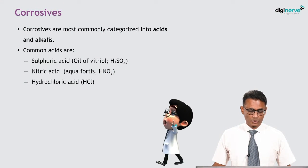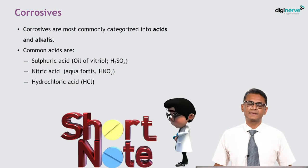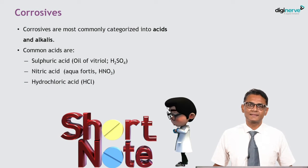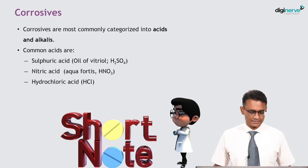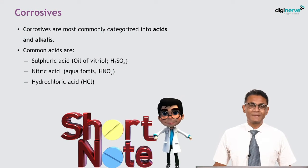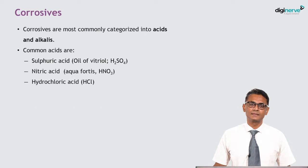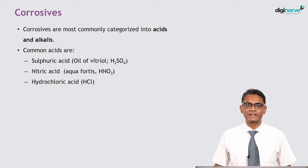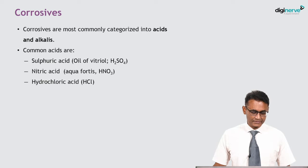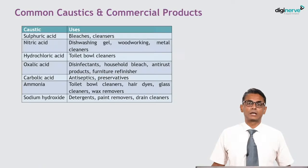Corrosives are commonly categorized into acids and alkalis. Common acids are sulfuric acid, also known as oil of vitriol (H2SO4), nitric acid or aqua fortis (HNO3), and hydrochloric acid (HCl).